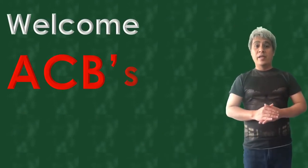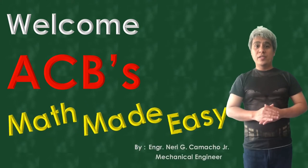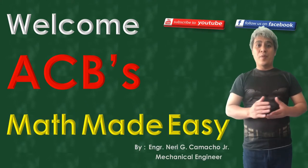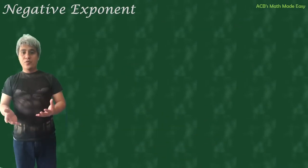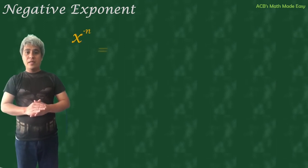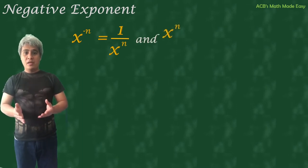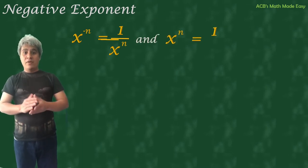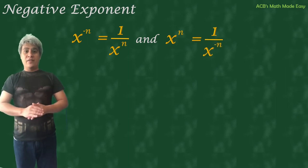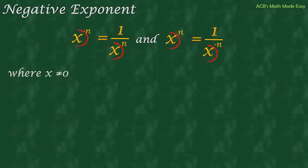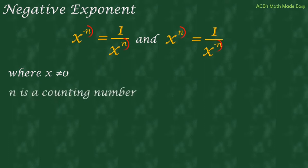Welcome to ACB's Math Made Easy Tutorial. My name is Neri and we are going to discuss today about negative exponents. We are going to prove x raised to negative n equals 1 over x raised to n, and x raised to n equals 1 over x raised to negative n. You have to consider that x must not be 0, and n must be a counting number.